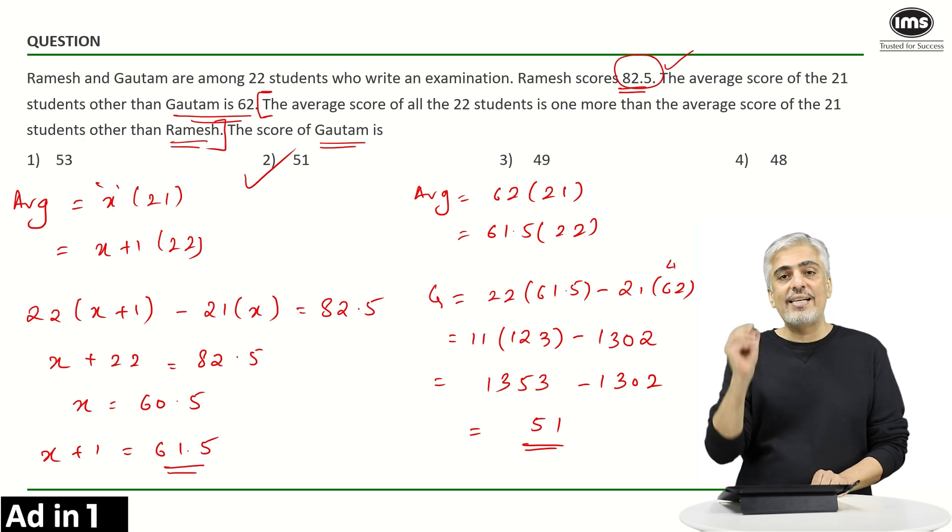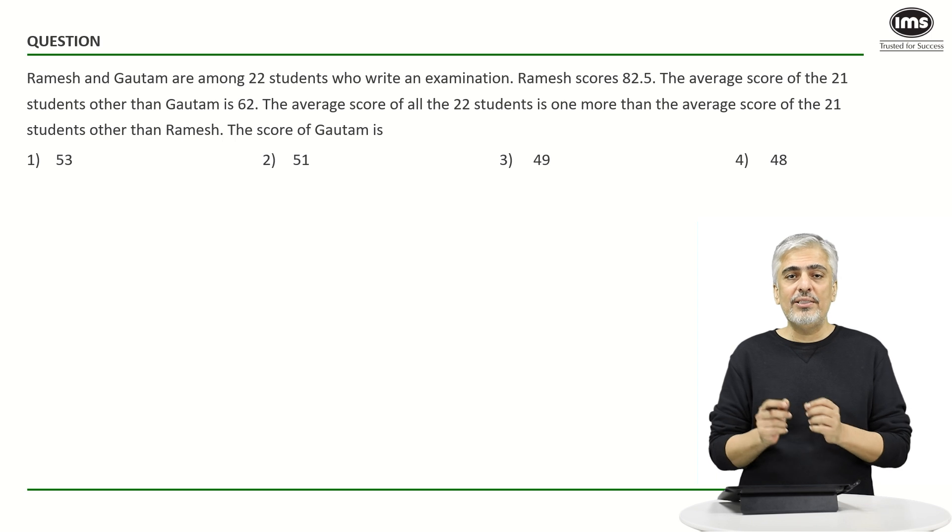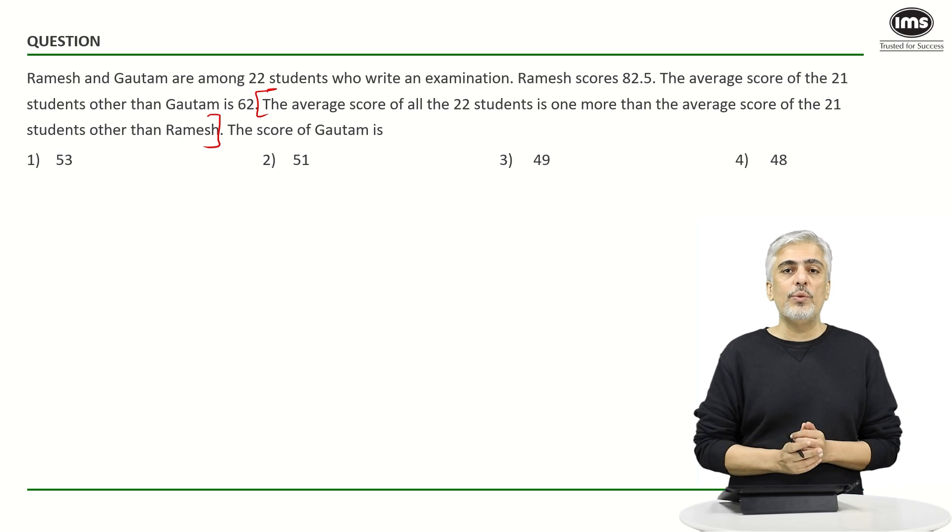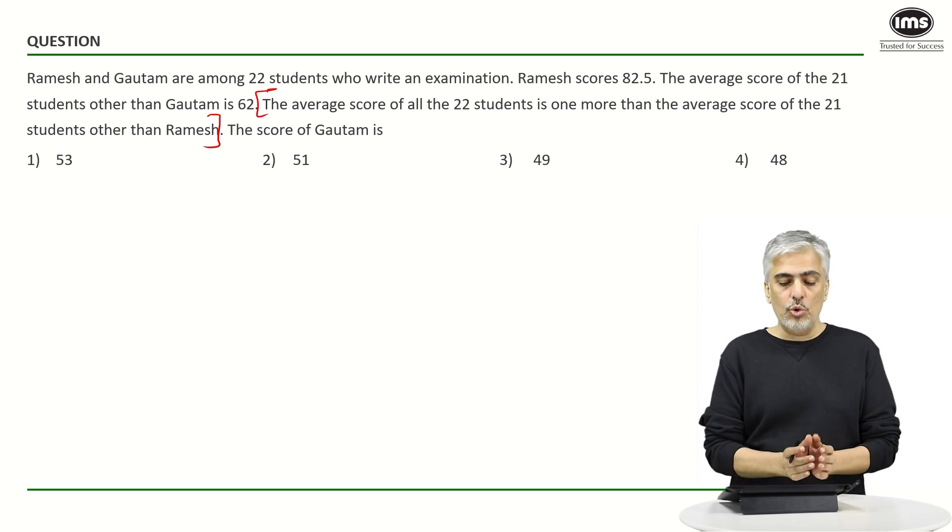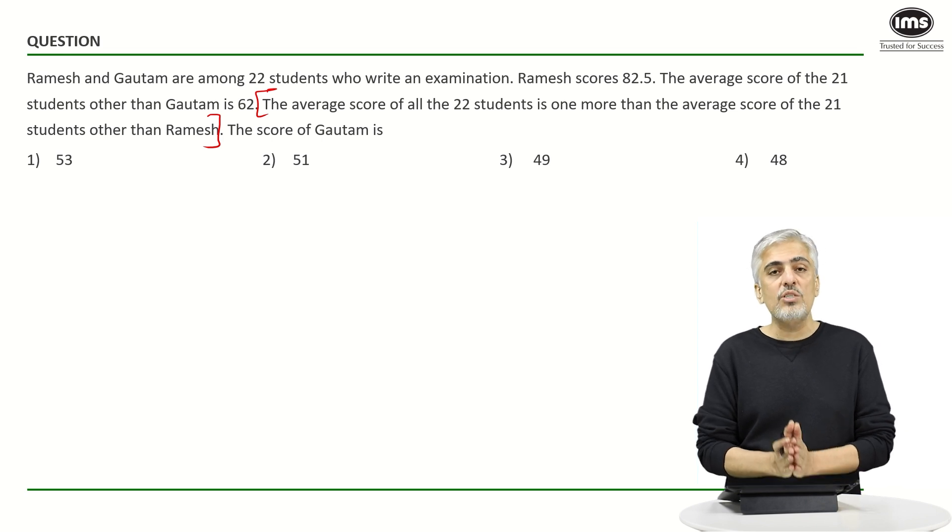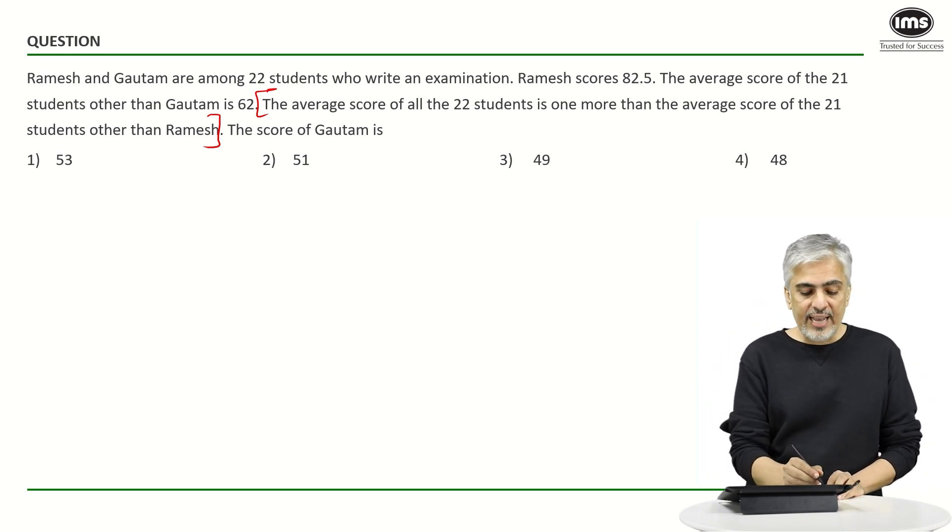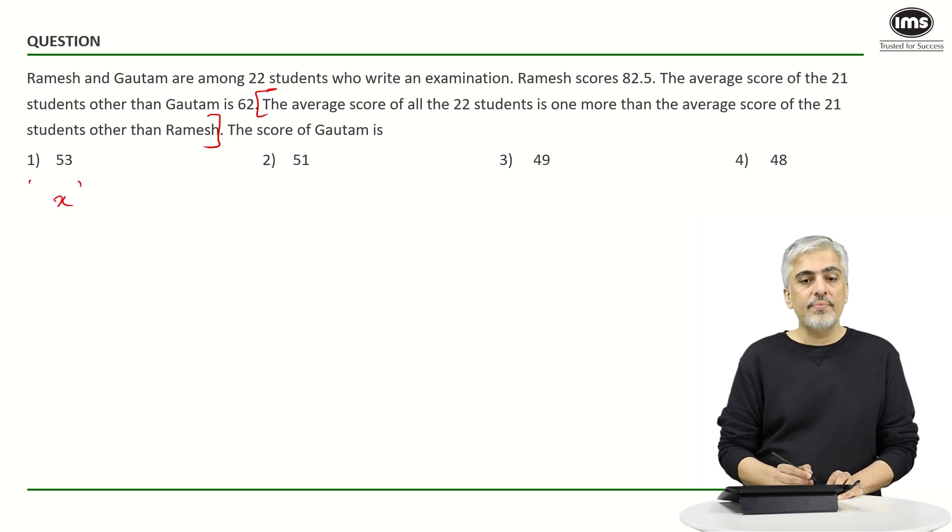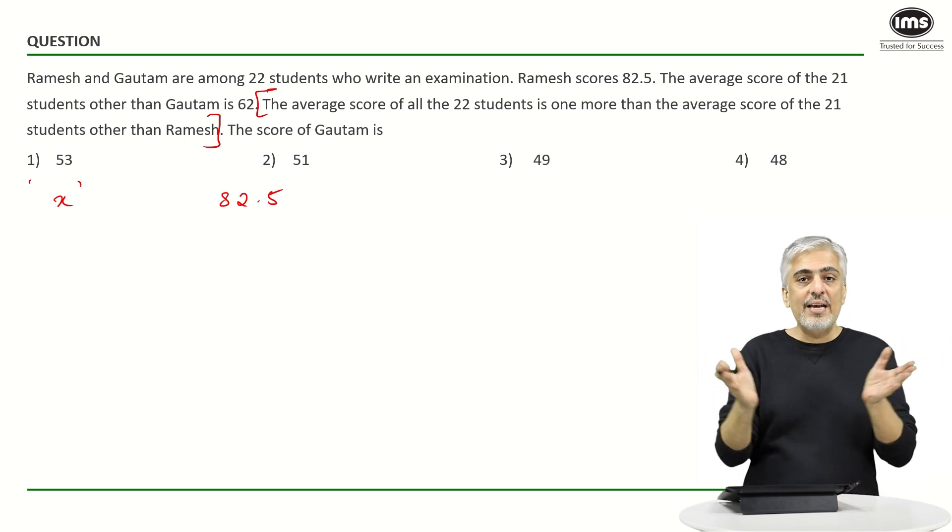Let's have a look at one more approach for the same question. As in the earlier method, we will start with the second statement only, but we're going to use only allegation over here. Let's see how do we go about that. So they've told us the average score of all the 22 students is one more than the average score of 21 students. So if I say the average score of 21 students is x, and Ramesh's score is 82.5, when they are mixed, you know it's like mixtures, the average becomes x plus 1.